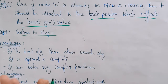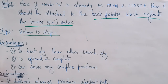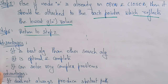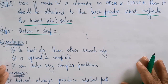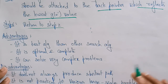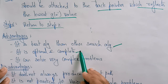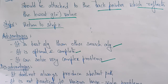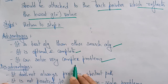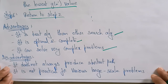So don't be confused — I will implement this algorithm on an example so you can clearly understand the A star search algorithm. Before that, let's see the advantages and disadvantages. Advantages: it is the best algorithm compared to other search algorithms; it is optimal and complete; it can solve very complex problems; and it is better than best first search because it is both optimal and complete.